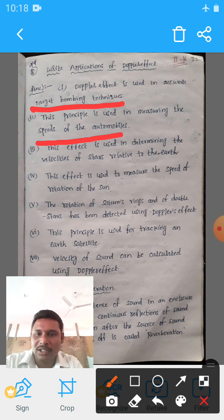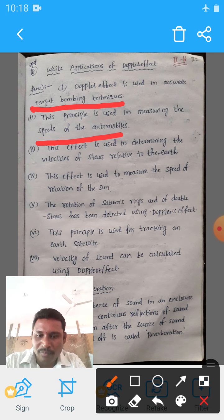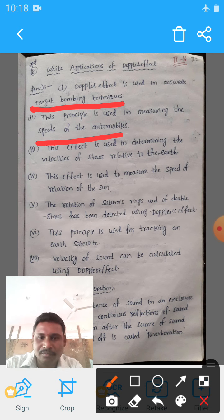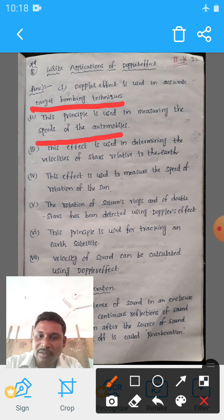And the Doppler effect is used to determine the velocities of stars related to the Earth. And what we can find here is we can find the velocities of stars and how the stars' velocity is relative to the Earth.